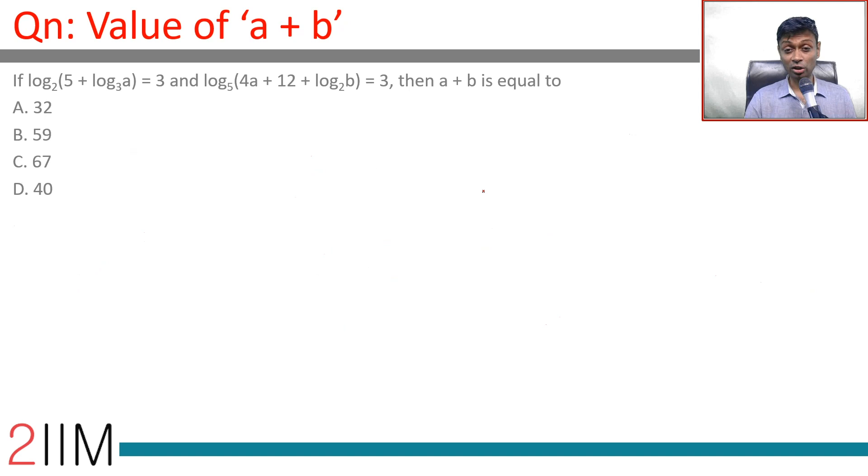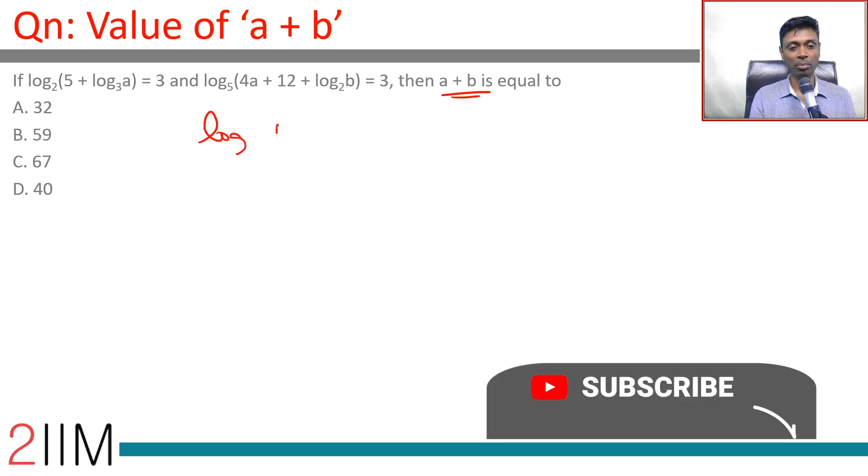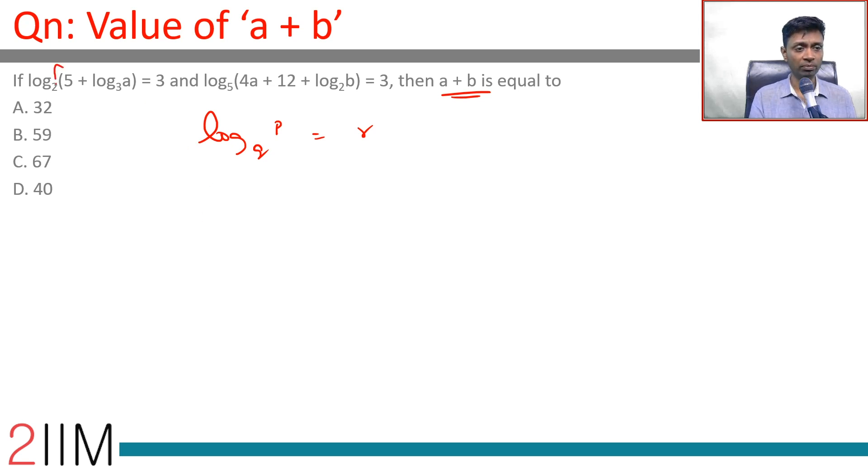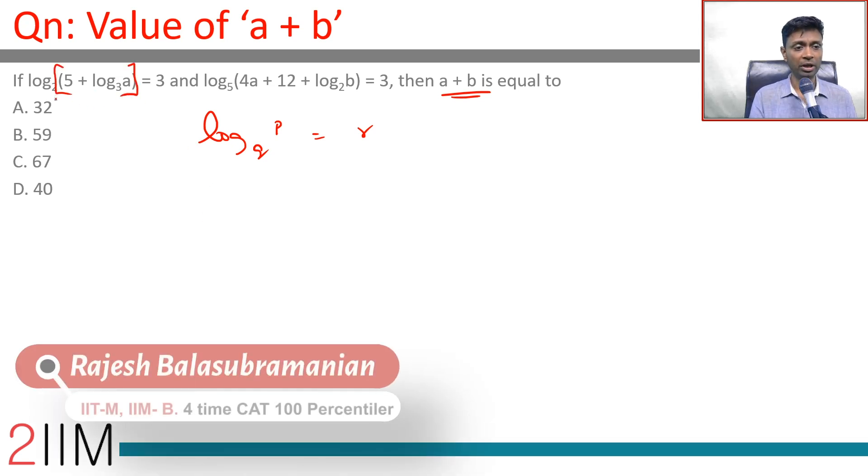This is a and b and log, and we want to find a plus b. Seemingly tough question, but it's not so. This is a very simple, very nice question. We need to know that log p to the base q is r.